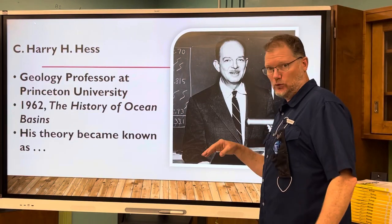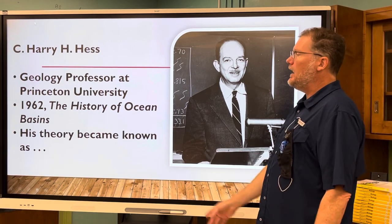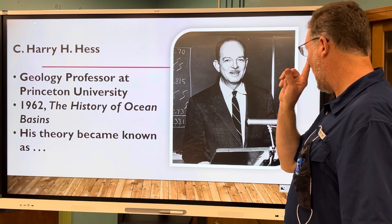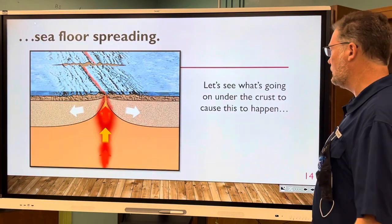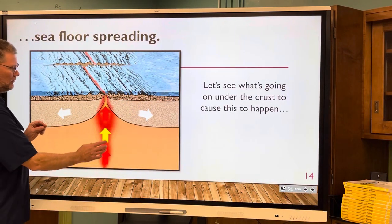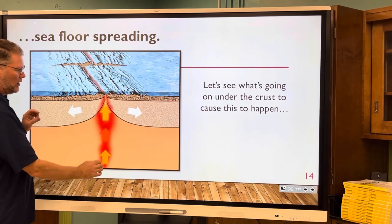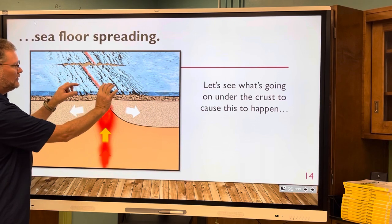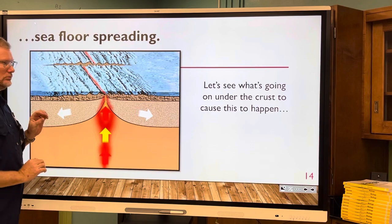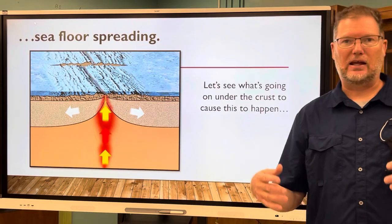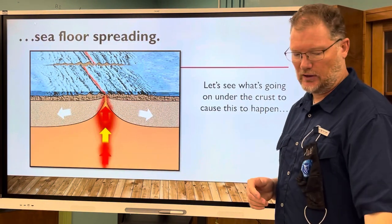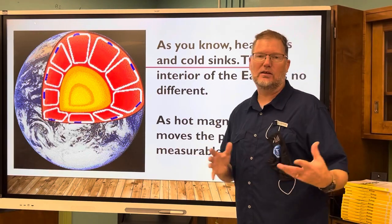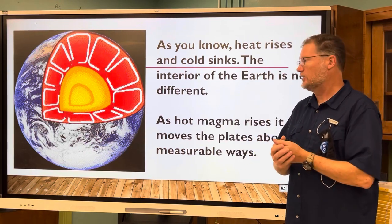In 1962, Harry H. Hess came in about 50 years later, wrote a book called 'The History of Ocean Basins,' and proposed the theory of seafloor spreading. You can see that something is causing these plates to move apart, making new magma come up, which cools and makes new rock — spreading and creating new seafloor, islands, and underwater mountain chains, as well as earthquakes and tsunamis.